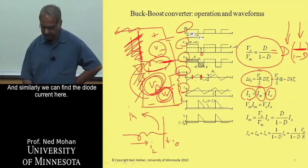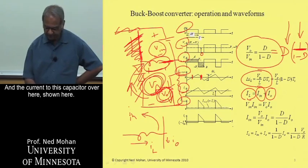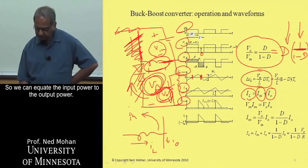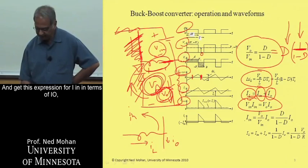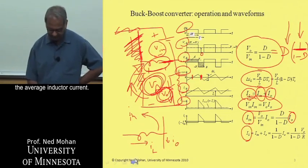And similarly, we can find the current to the diode here, this diode here, and the current to this capacitor over here, shown here. So we can equate the input power to the output power and get this expression for I IN in terms of I O. And similarly, we can get the expression for the average inductor current.